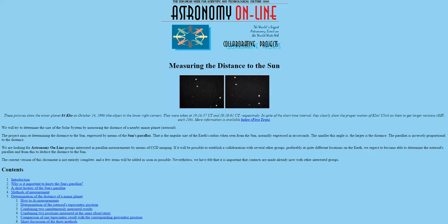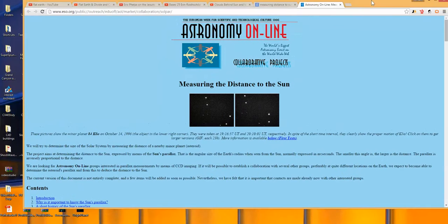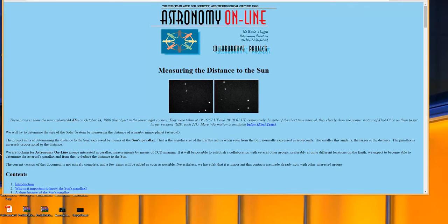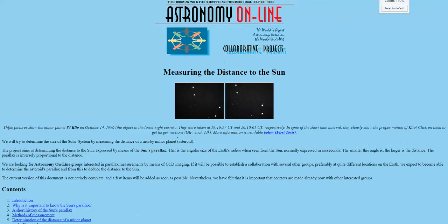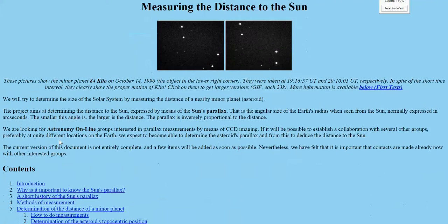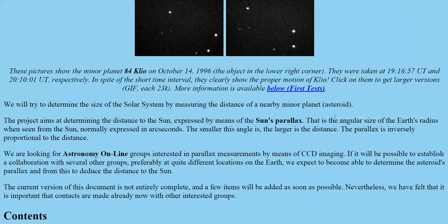So this is ESO.org — European Week of Scientific Technology Culture — and this is Astronomy Online. This is talking about how we will determine the size of the solar system by measuring the distance of a nearby minor planet — what they're calling a planet here, guys — an asteroid.